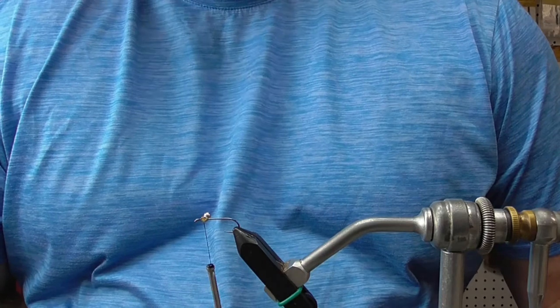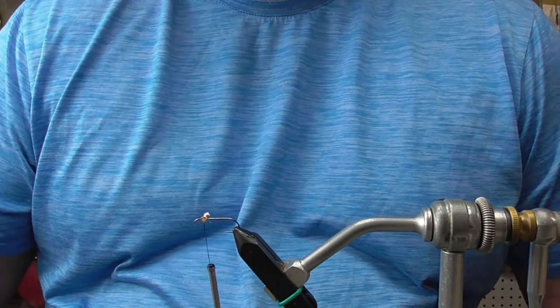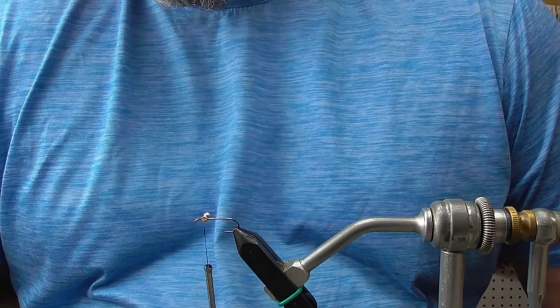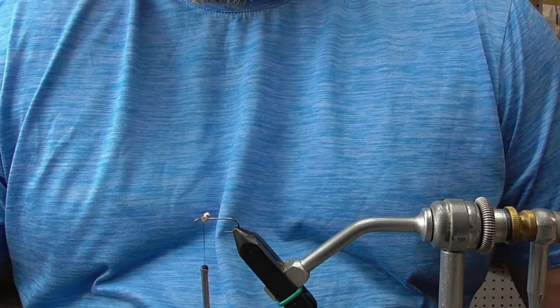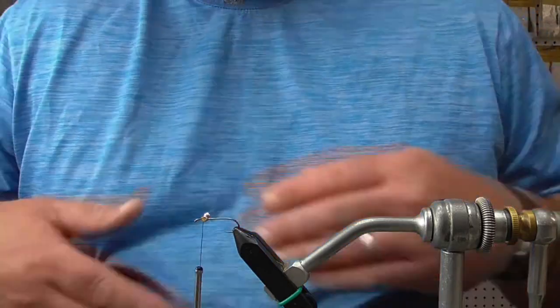So that's a quick, easy way to make some dumbbell eyes, some heavy lead eyes for any of your small streamers. Heck, you could go down, put the size maybe 20-pound test, maybe even 10, and go to some really small one-and-a-half or two millimeter beads.